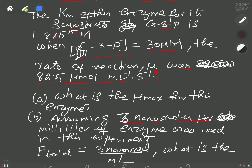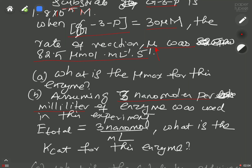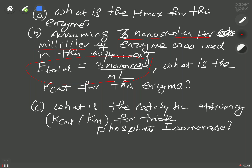The second question is: if the total enzyme concentration is 3 nanomoles per milliliter, what is the Kcat — the catalytic constant or turnover number — for this enzyme? I also ask you to calculate the catalytic efficiency.